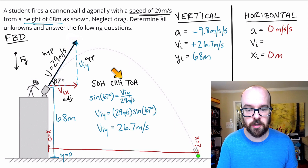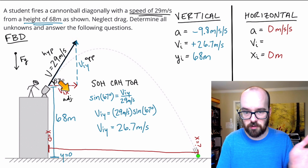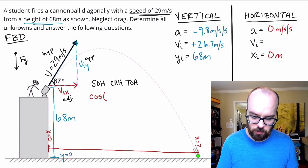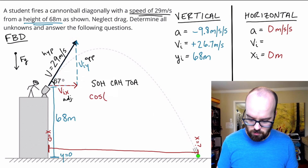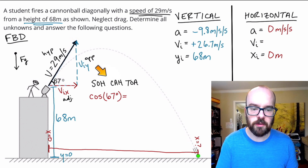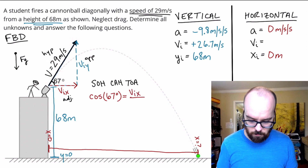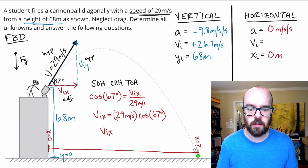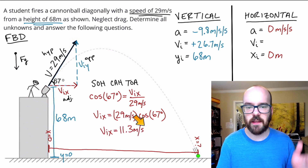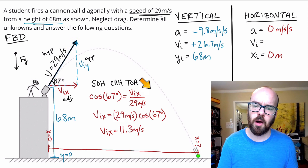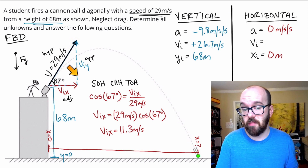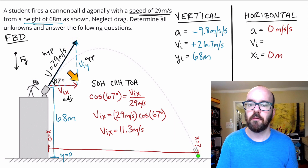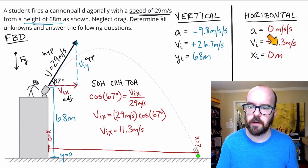We're going to do the same thing using cosine to solve for the adjacent side — our initial horizontal velocity. Cosine of 67 degrees equals Vix over 29. Multiplying both sides by 29: Vix equals 29 times cosine of 67 degrees. That gives us Vix equals 11.3 meters per second — how fast it's moving to the side when launched. That number is smaller than the vertical component, which makes sense because the horizontal component vector is shorter, since the angle is greater than 45 degrees.